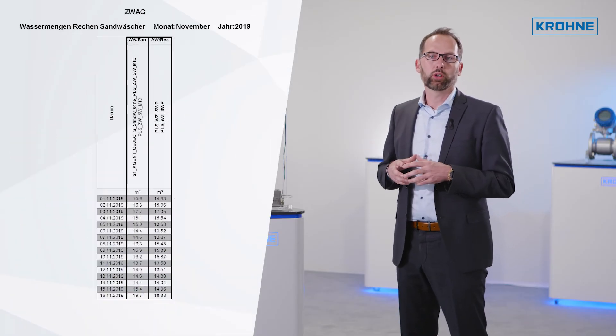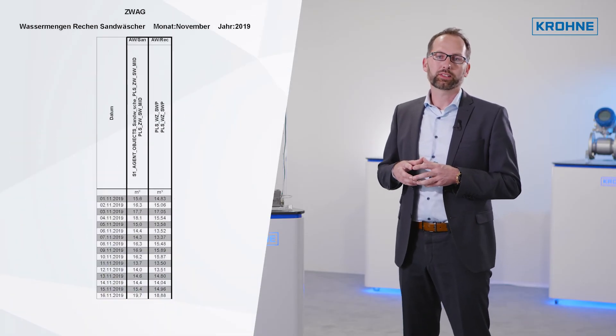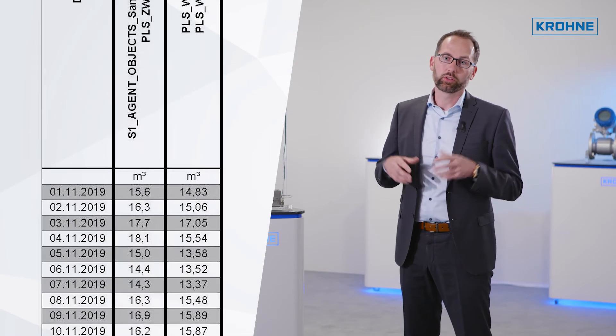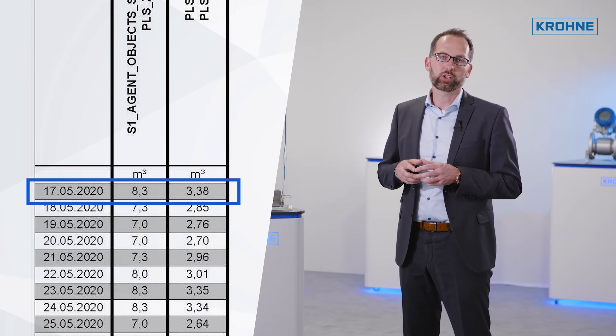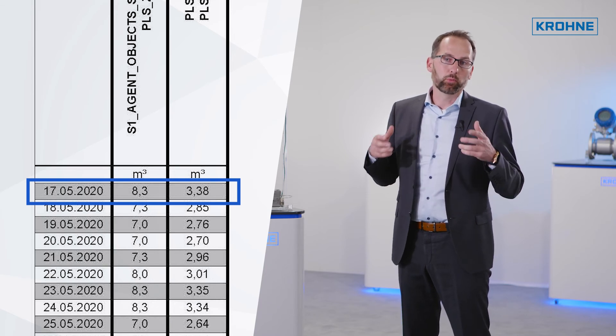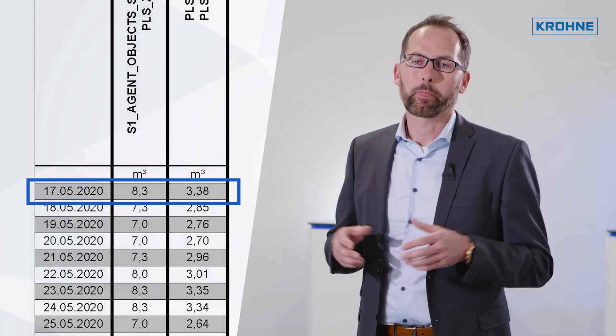The water consumption of these two plant sections has been considerably reduced by the use of flow measurement while the washing result remains the same. This optimization pays for itself after only a short time and thus makes a lasting contribution to increasing the efficiency of the entire plant.